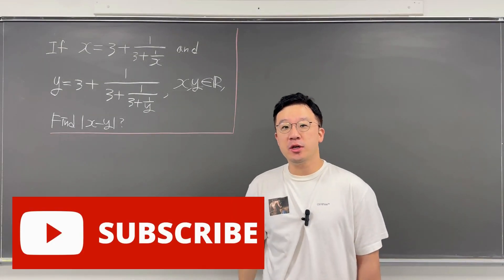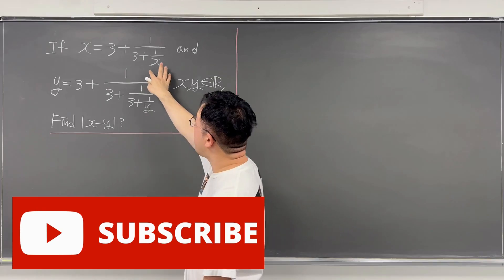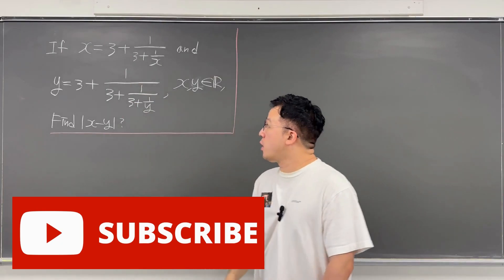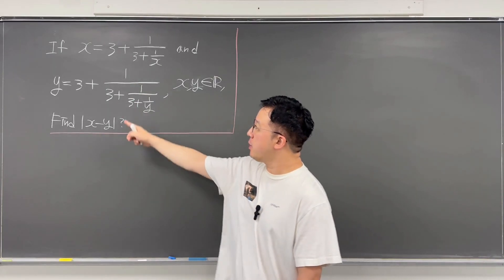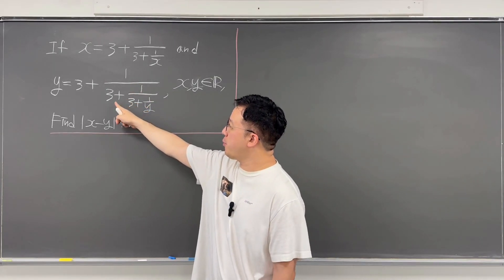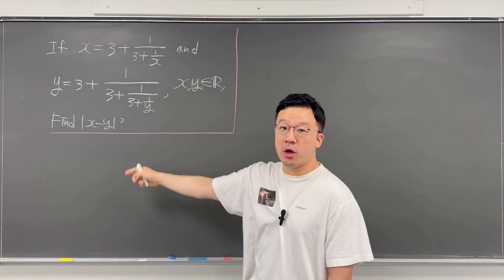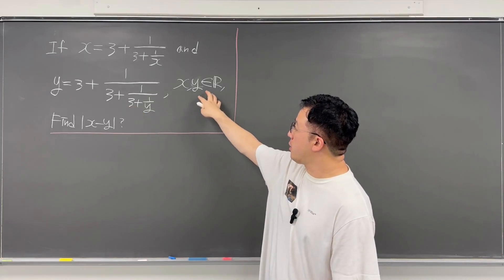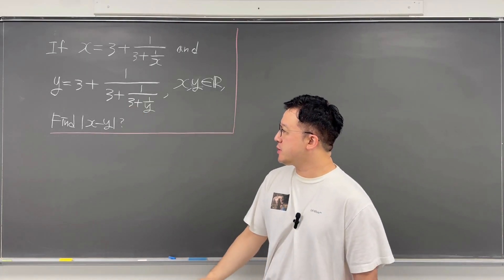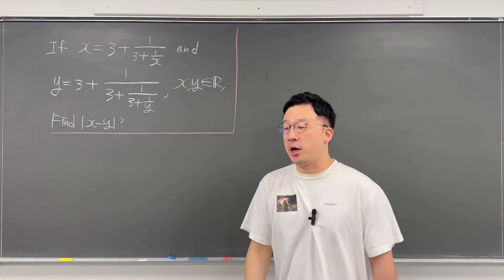Okay, here's the question. The question is: if x is equal to 3 plus 1 over 3 plus 1 over x, and y is equal to 3 plus 1 over 3 plus 1 over 3 plus 1 over y. Both x and y are real numbers. What's the absolute value of x minus y?